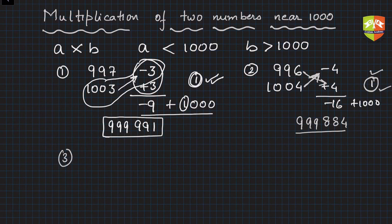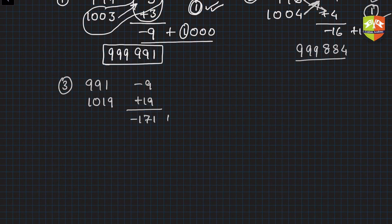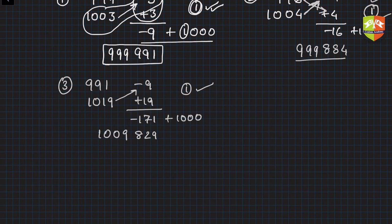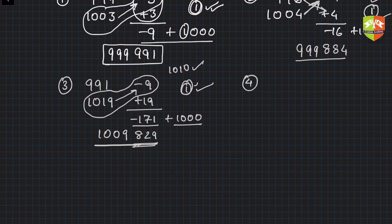Let's take another example a little faster: 991 and 1019. The deviations are minus 9 and plus 19. Now 19 times 9 is minus 171 — negative times positive — so minus 171. Add thousand: you get 829. Keep this 1 aside and then do the diagonal: 1019 minus 9 is 1010, subtract 1 to get 1009. So the product is 1009,829.